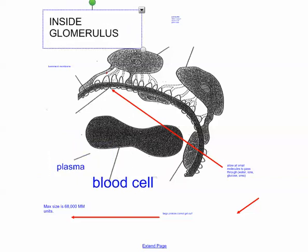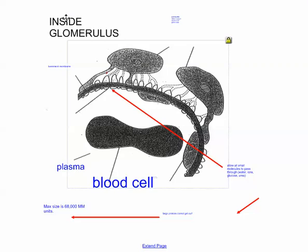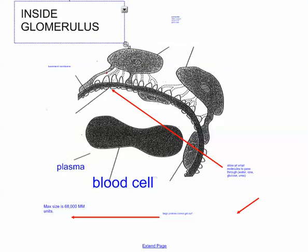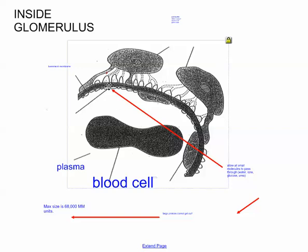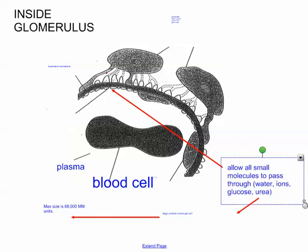So we're looking inside the glomerulus. There are some important things on this diagram and some that are just structural and not so important. A key thing here is that the wall of this capillary is actually fenestrated. The walls here are fenestrated — fenestrated means it has holes in it.